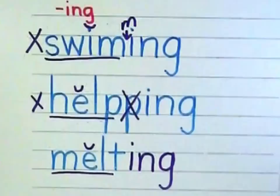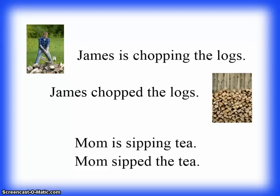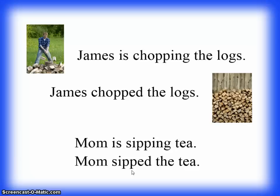When you work on your papers today, count to two very carefully when counting consonants and add your suffixes right the first time. Suffixes help to tell us when something happened. Look at this sentence: "James is chopping the logs." The ING on the end of "chop" tells us he's doing the chopping right now. In this sentence, "James chopped the logs" — the ED tells us he's done, he finished his job. "Mom is sipping tea" — the ING tells us mom's sipping the tea right now. "Mom sipped the tea" — she's done, her cup is empty. Notice when these suffixes were added, since there's a short vowel each time, we have two consonants.